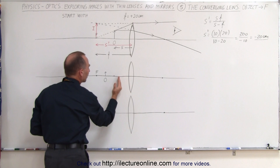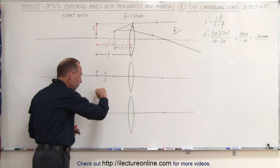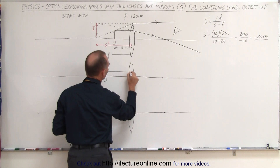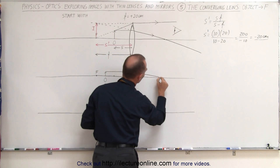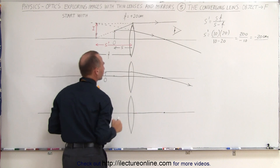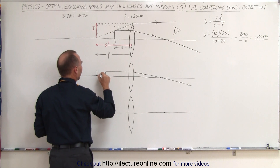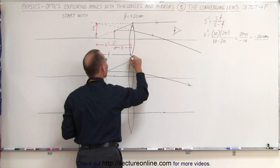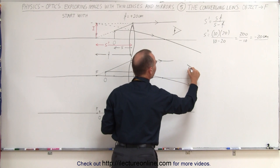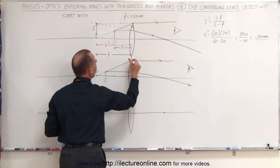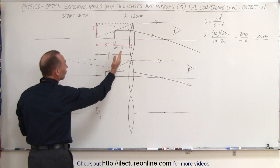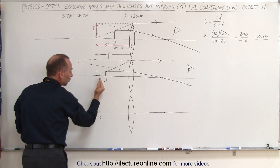Now what will happen when we start bringing the object closer and closer to the focal point? Notice that I'm starting to make the object smaller and smaller — there's a reason for that and you'll see that in just a moment. Again we draw a line from the tip of the object straight down to the lens parallel to the optical axis, then the light will bend and go to the focal point on the other side. The second ray again goes from the tip of the object through the focal point to the lens, but since we're already past the focal point we'll draw a dashed line, then continue with the ray. Again the observer on this side of the lens will see the two rays coming in this direction, and the brain projects that the image must have come from back here somewhere. You can see that in this case the image forms farther and farther away from the lens as we bring the object closer and closer to the focal point.